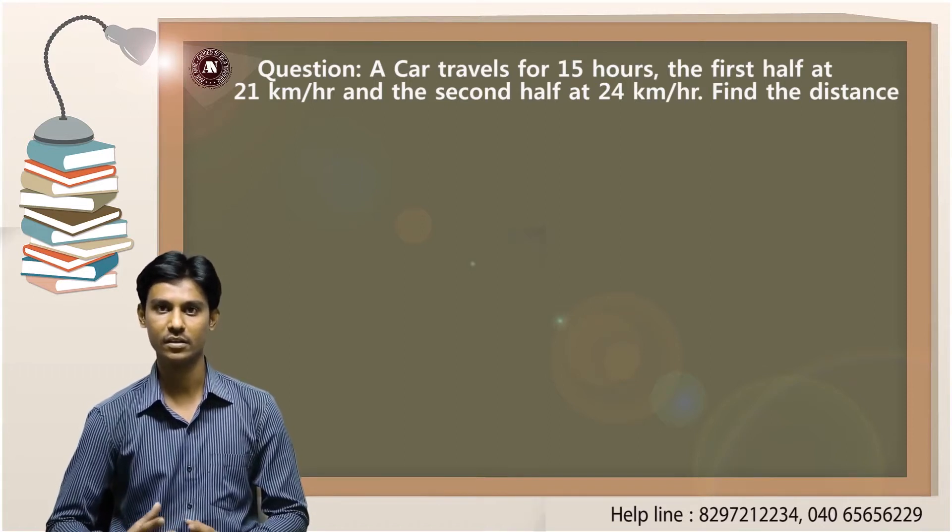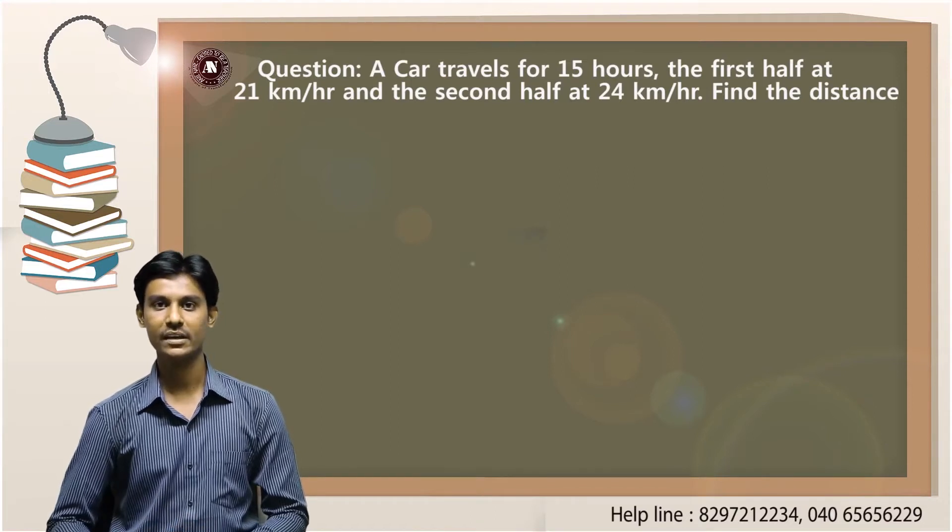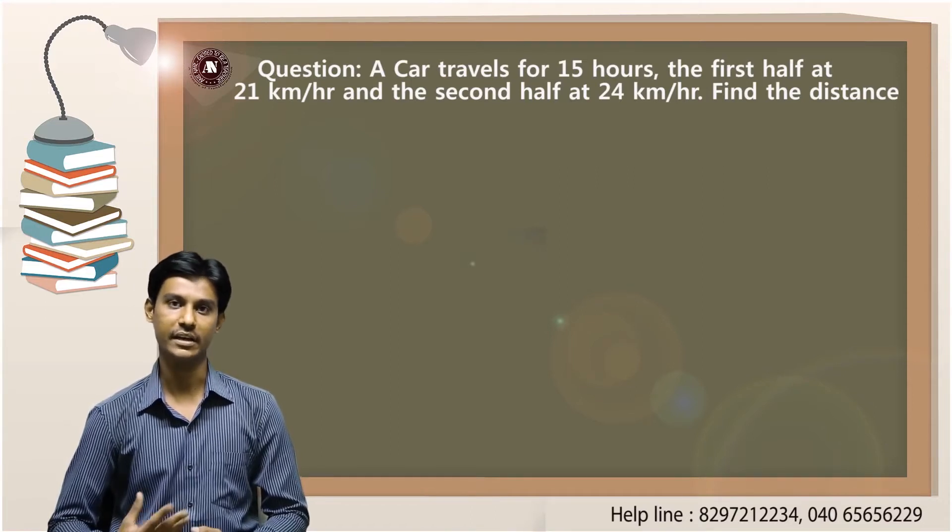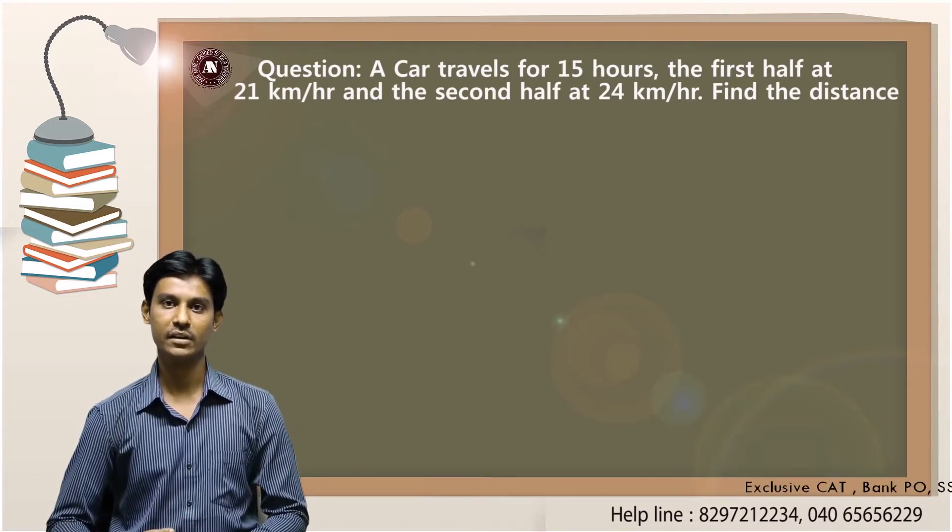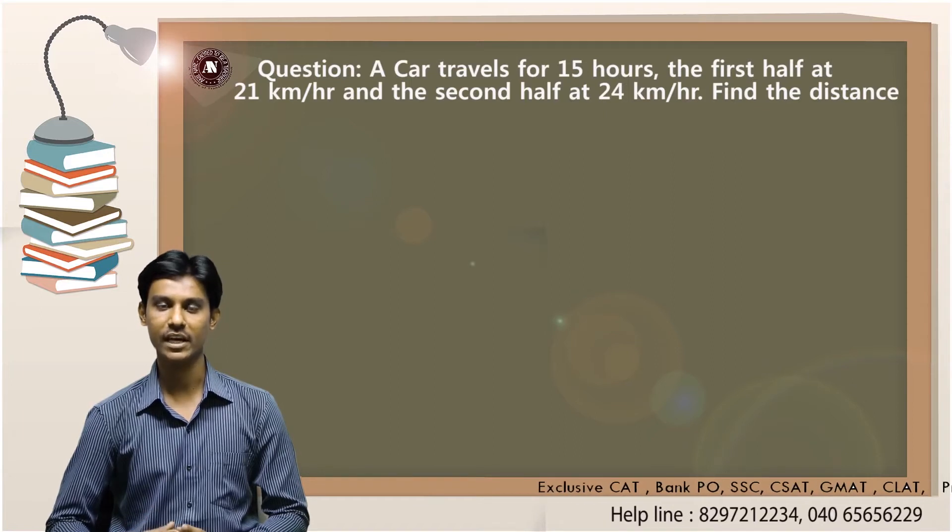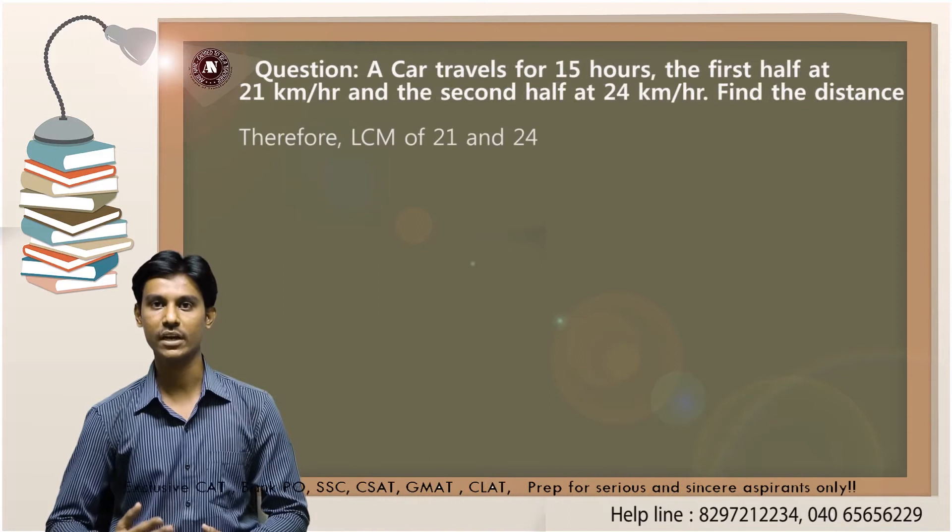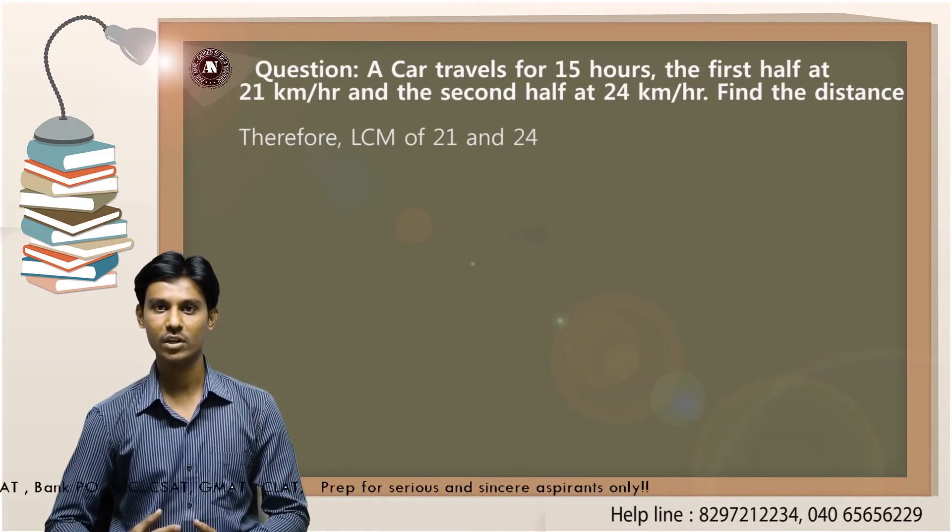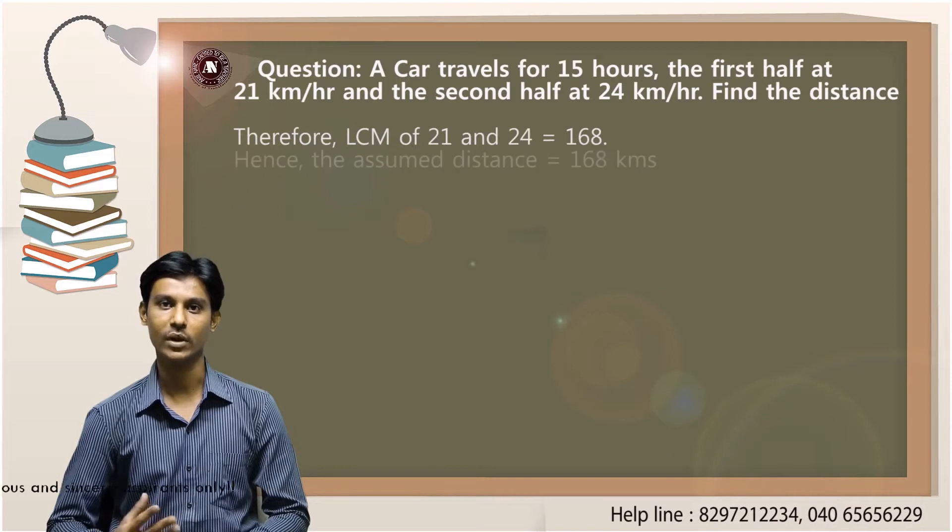The first thing students take is let the distance be x. Let me try explaining in a different way such that we are not taking any variable here. Instead of assuming the distance as a variable which is x, let me assume the distance as the LCM of the given speed 21 and 24. The LCM of the given speed 21 and 24 is 168. So I will assume the distance as 168 kilometers.